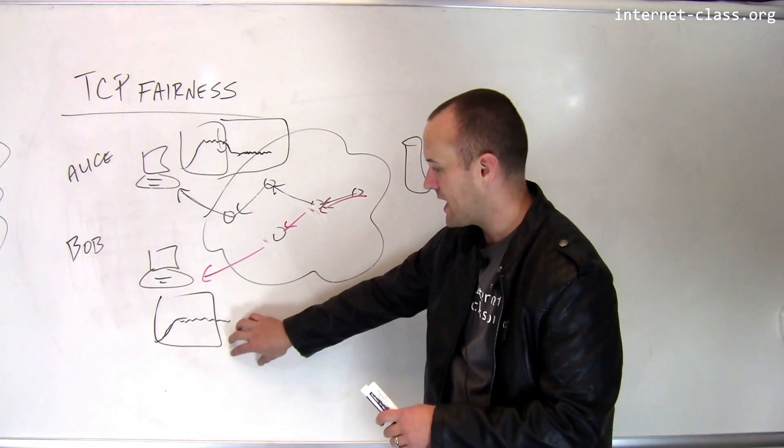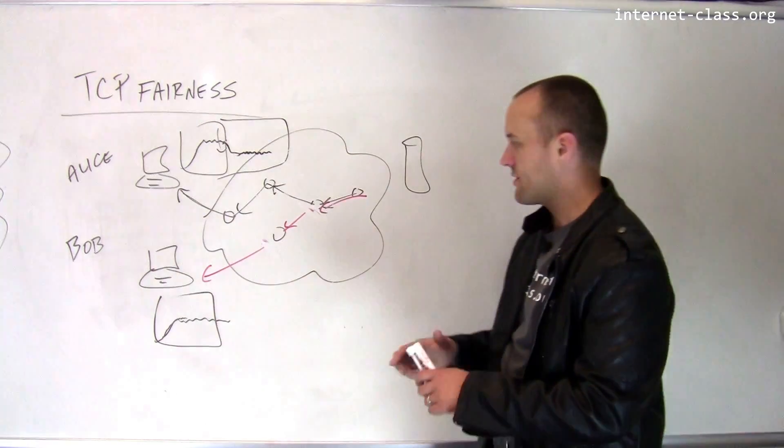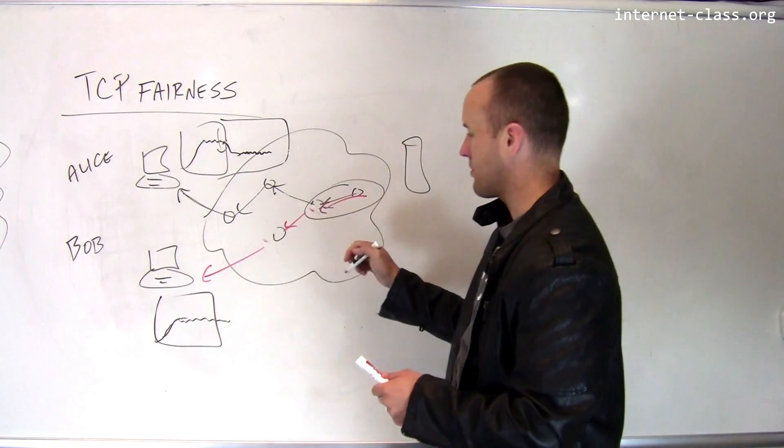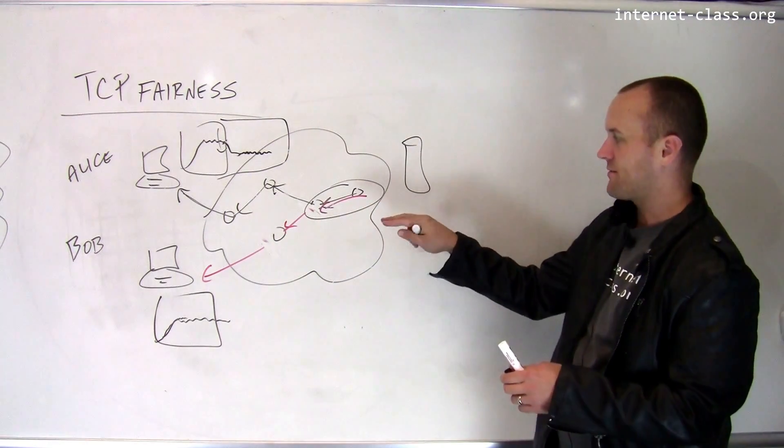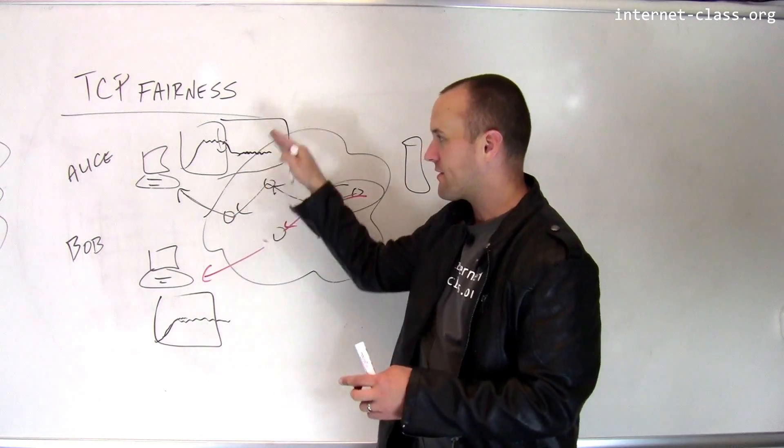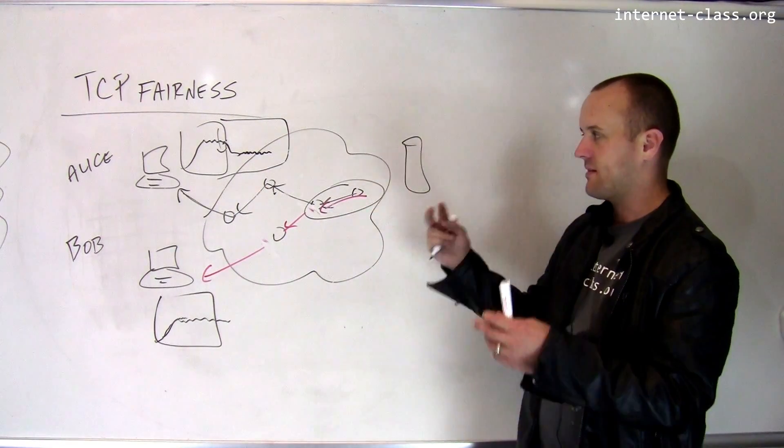So eventually what will happen is Bob will be achieving some speed, Alice will be achieving some speed, and the combination of their traffic should saturate some part of the network. So in this case, it's fast enough that these routers can just keep up with it. If either Alice or Bob tried to increase their connection faster, these routers would start to drop packets and they would slow down again.